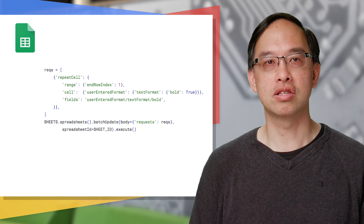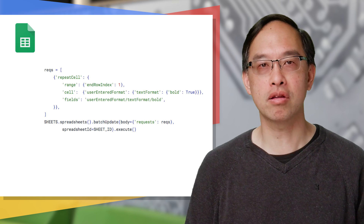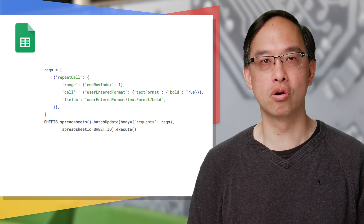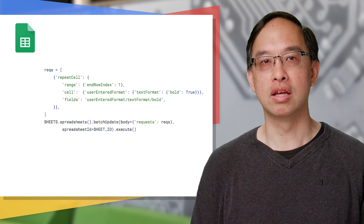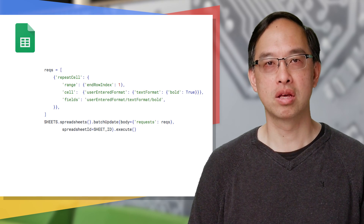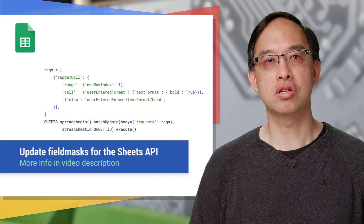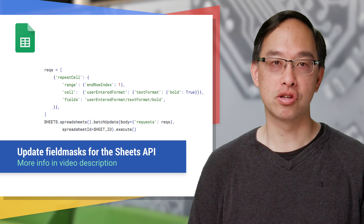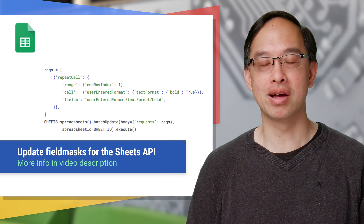Here's the original JSON in actual Python code that bolds row number one, leaving all other attributes untouched. Also see the Sheets API page on update field masks.